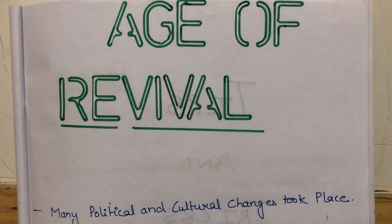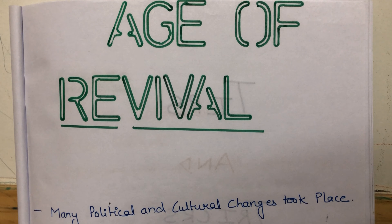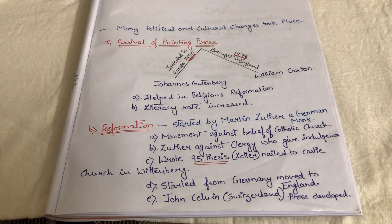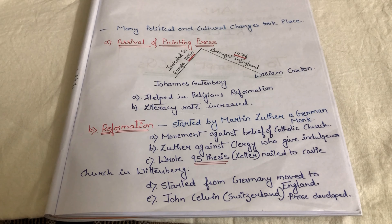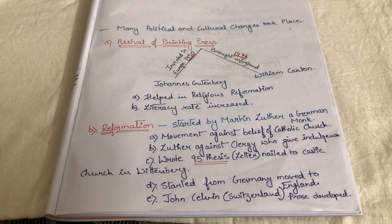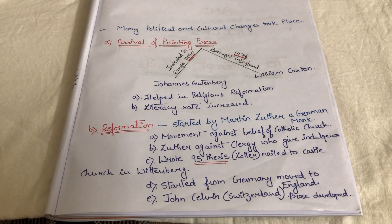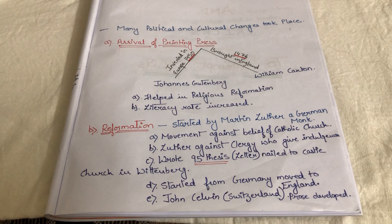There were many political and cultural changes that took place in this age. The first and foremost thing that happened was the arrival of the printing press. The printing press was invented in Europe by Johannes Gutenberg in 1450 and was brought to England by William Caxton in 1476.